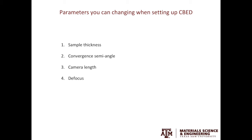When setting up the convergent beam electron diffraction, there are a few things we need to consider: sample thickness, convergence semi-angle, camera length, and defocus. Let's look at these one by one.